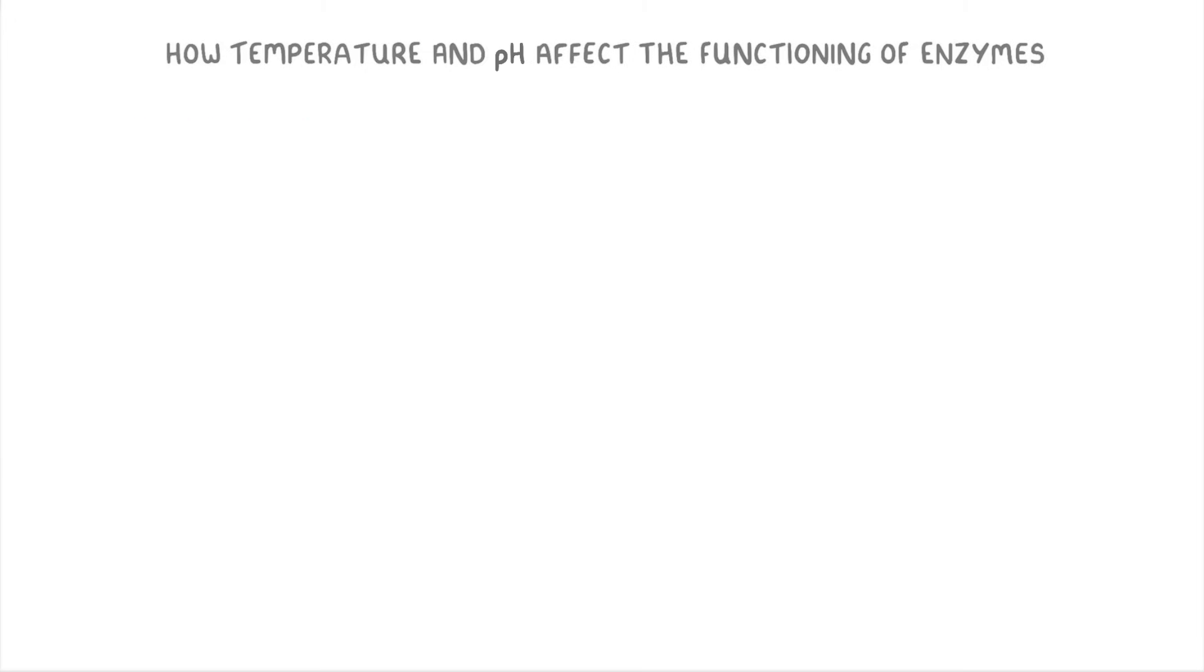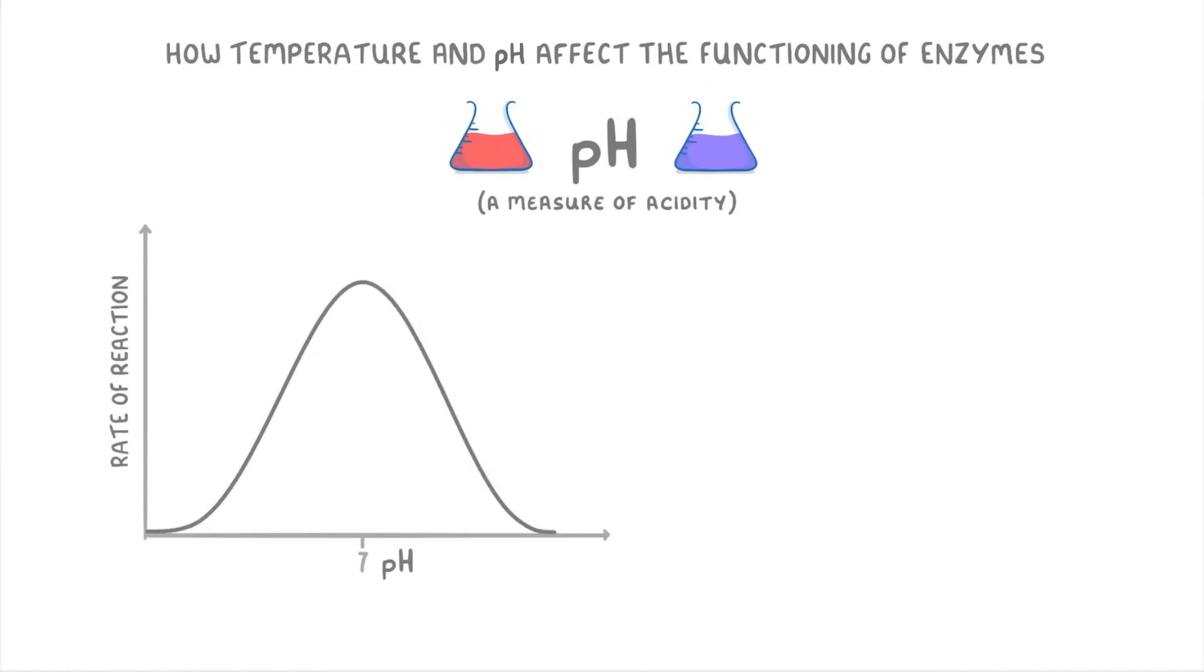The other factor that can affect enzymes is pH. pH is a measure of acidity. And as you can see on this graph here, if the pH gets too high or too low, then it will lower the rate of reaction.